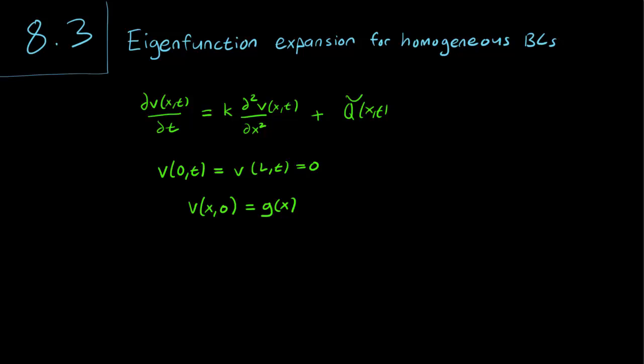So we have here our differential equation and it is non-homogeneous. However, we have homogeneous boundary conditions V(0,t) equals V(L,t) equals zero.